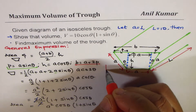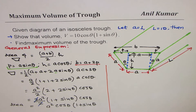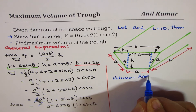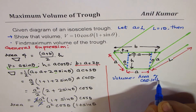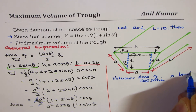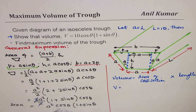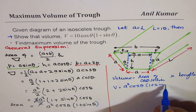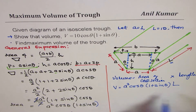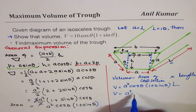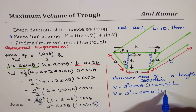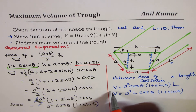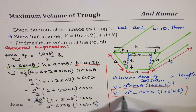Volume equals area of cross section times length. So the volume V equals a squared cos theta times (1 plus sin theta) times L. That's our general formula: V equals a squared L cos theta times (1 plus sin theta), where theta is the base angle.